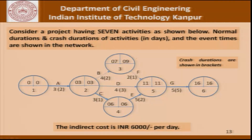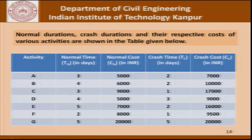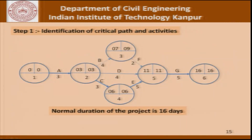We will consider a project having 7 activities as shown with their dependencies. Normal durations and crash durations of activities in days and the event times are shown in the network. Tn is the normal time and Tc is the crash time. We are also given that the indirect cost is 6000 rupees per day. The table gives the normal cost and crash cost for all activities — for activity A for example, normal time is 3, crash time is 2, crash cost is 7000 and normal cost is 5000.